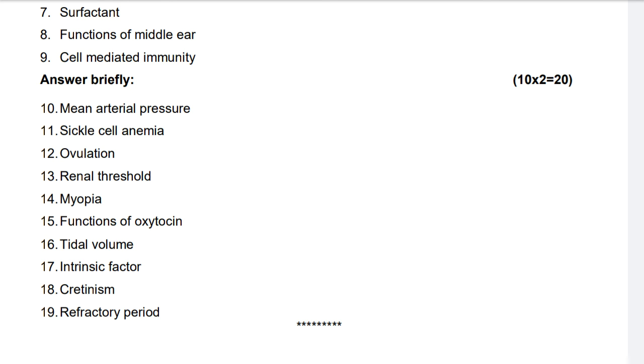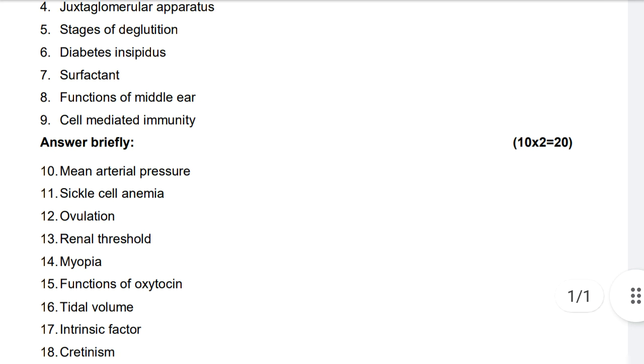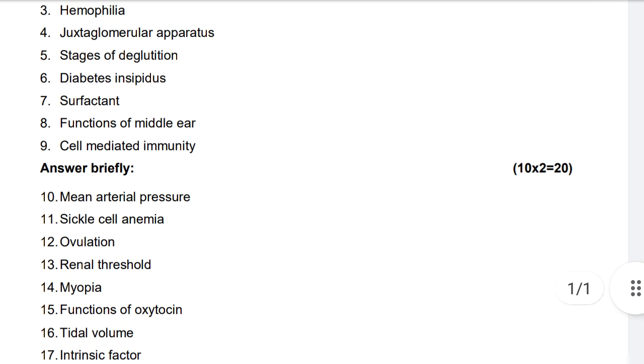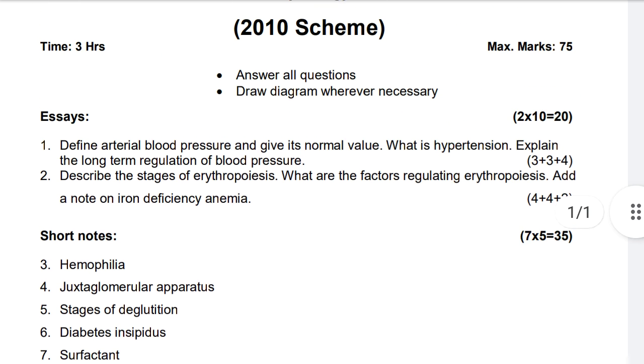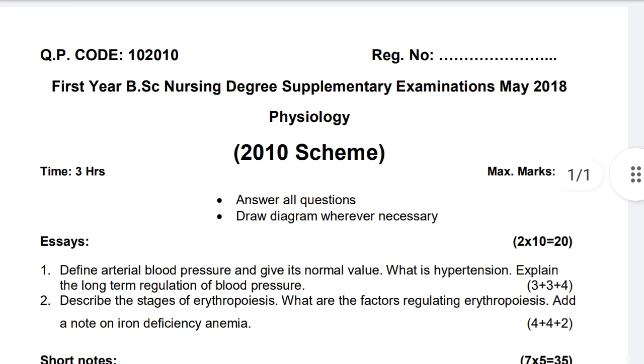Cretinism and refractory period. You have to attempt 2 marks each, 10 questions to attempt for 20 marks. This is the question paper physiology for first year May 2018.